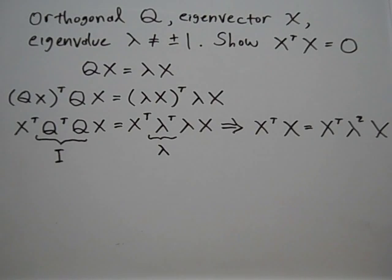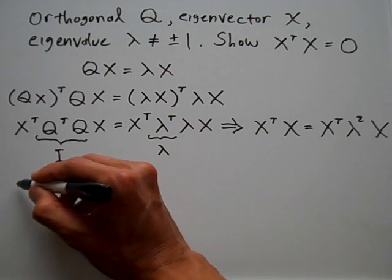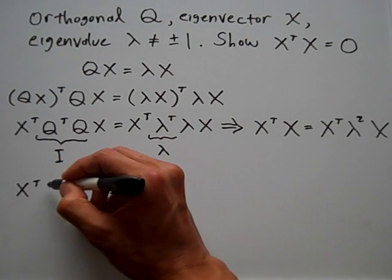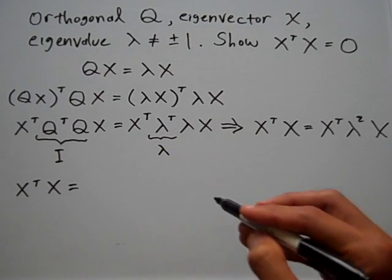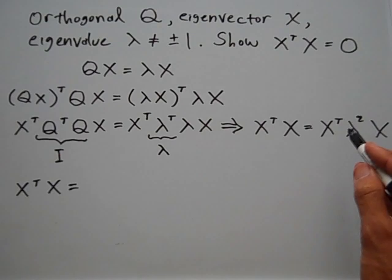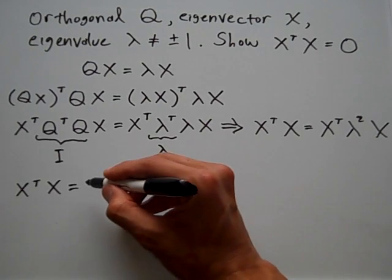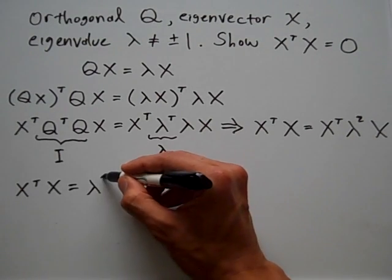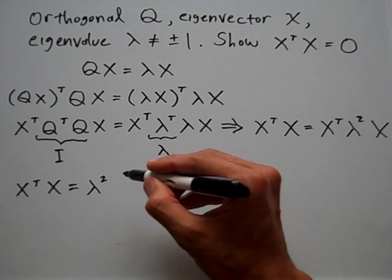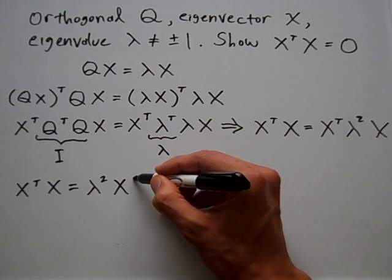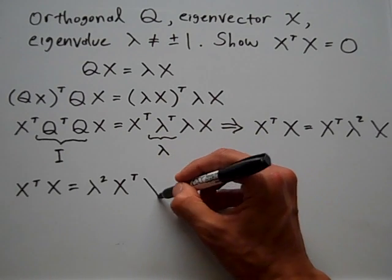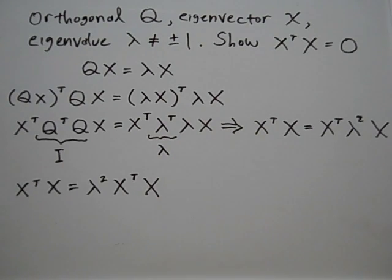Rewriting this again, I have X transpose times X equals lambda squared times X transpose times X. Lambda squared is a scalar, so I can move it in the front without destroying any equality here.